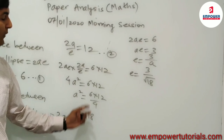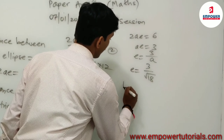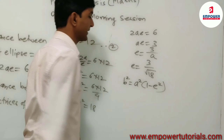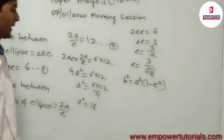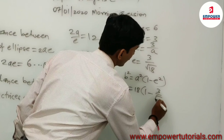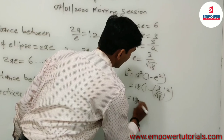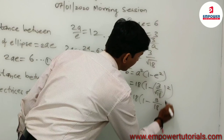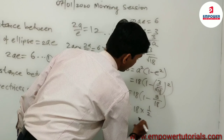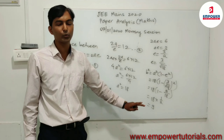Now we are going to find the length of the latus rectum. The parameter we need is B². B² is given as A²(1 - E²). So this equals 18 × (1 - (3/√18)²) = 18 × (1 - 9/18) = 18 × 1/2 = 9. So B² is equal to 9.